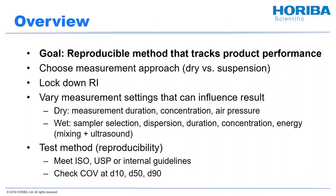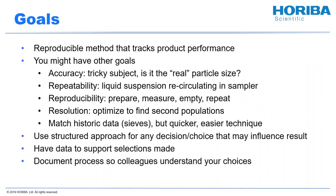Quick overview. We'll talk a little bit about goals for building methods, then about choosing your measurement approach. You lock down your refractive index, you vary measurement settings that can influence the result — which could be measurement duration or sample selection — and then you test the method to see if it's reproducible and works well. The goal of method development is really a reproducible method that tracks product performance — does it track how your product performs? Most people track particle size because they want to see how the material will flow, how drugs release, how it compacts in tablets, and so on.